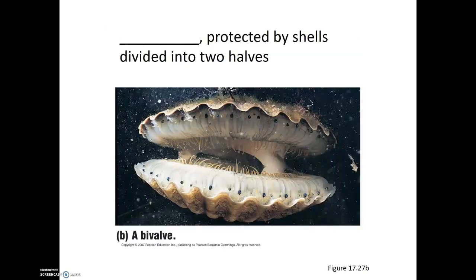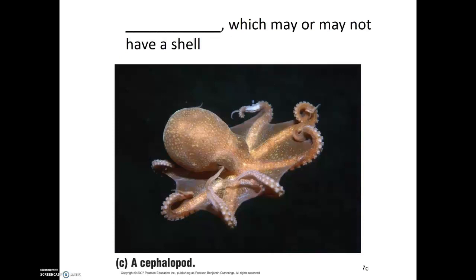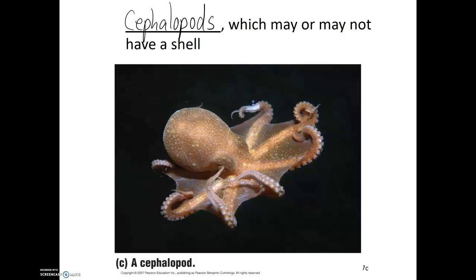The next group of molluscs are the bivalves — shellfish which have two valves or shells, which protect the soft inner body mass of these animals. The last group of molluscs are the cephalopods. The prefix cephalo means head, whereas pod refers to feet, so these are literally the 'head feet.' If you look at an octopus or a squid, you can see that the body of the animal immediately transitions from the appendages right to the head where we have the eyes and the mouth. So our three groups of molluscs are the gastropods or stomach feet, the bivalves or two shells, and the cephalopods or head feet.